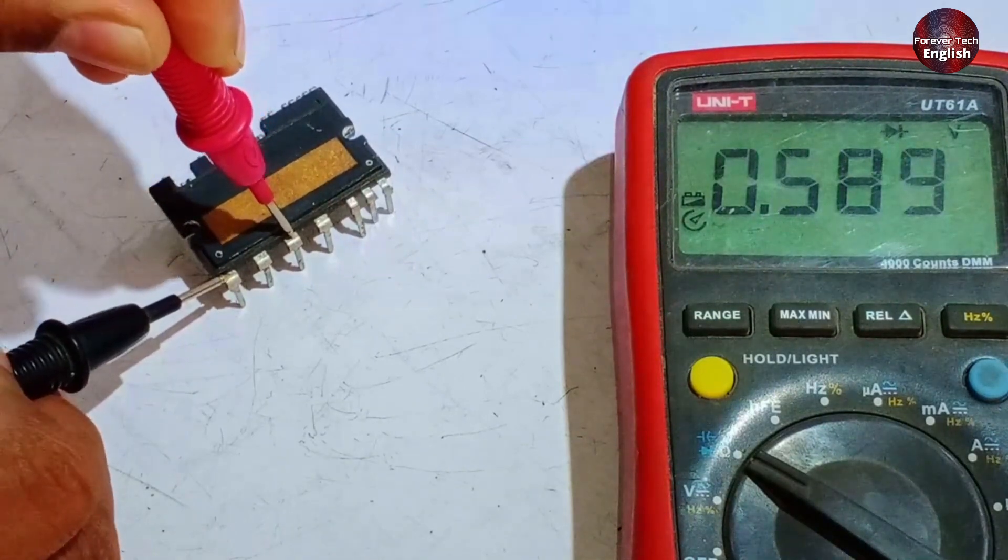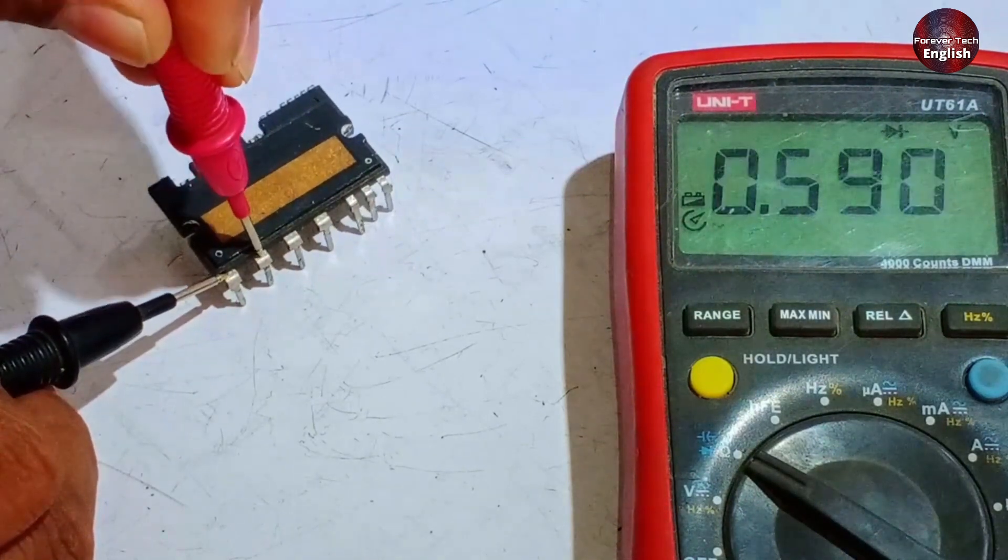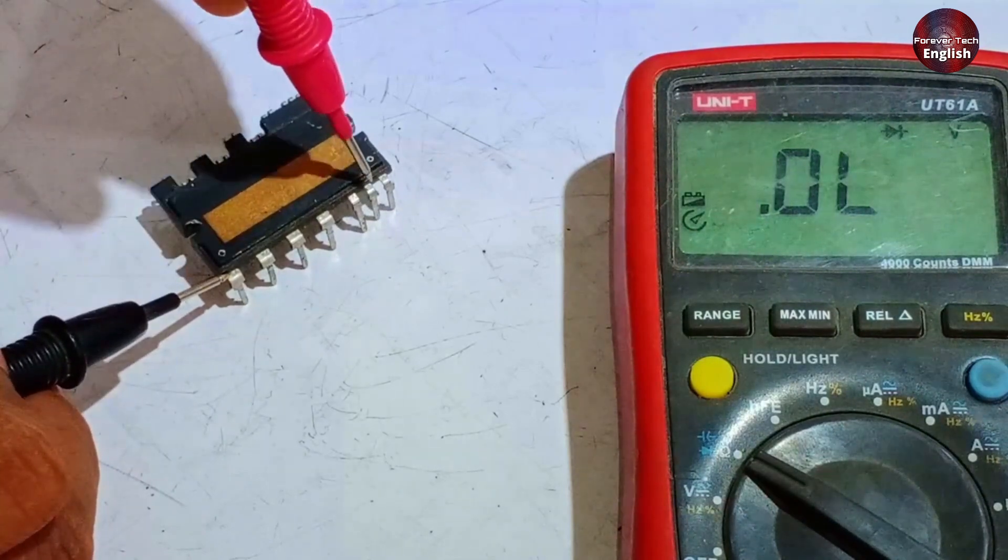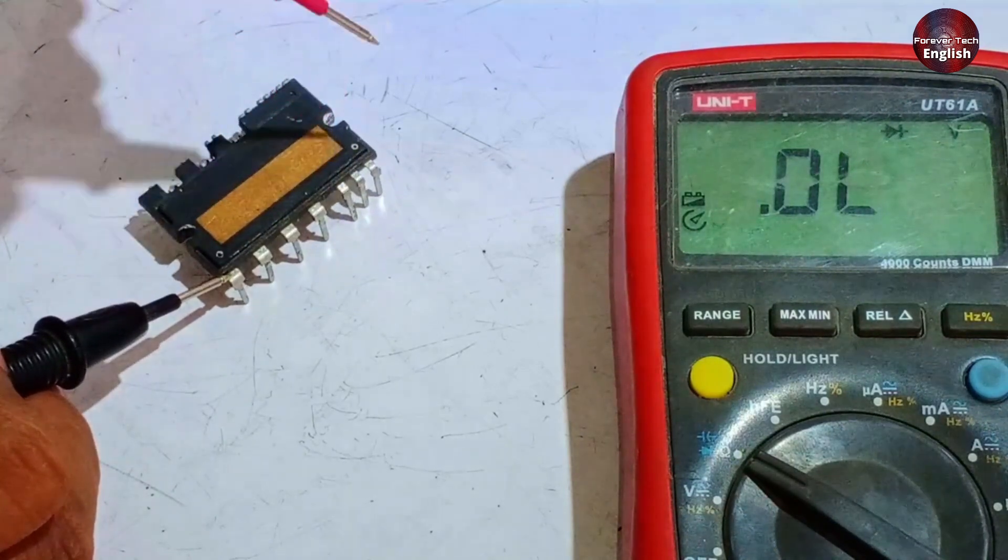Similarly, there should be a value displayed here, and then pin 26 should also show a value. Both of these are correct. So, only pins 22 and 23 should not show any value.